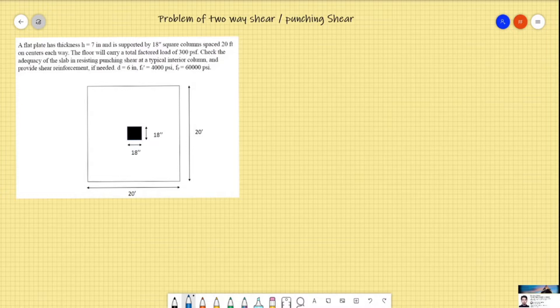Hello viewers, today we will solve the problem of two-way shear design for a two-way slab. In this problem, a flat plate has a thickness of 7 inches and is supported by 18-inch square columns spaced at 20 feet from center to center.